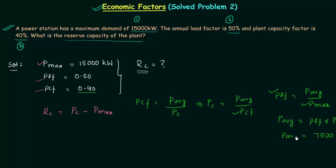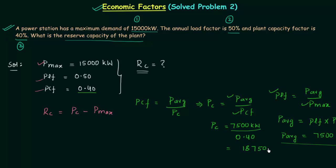This is the value of P average. I will substitute this value to calculate the plant capacity: 7,500 kW over PCF which is 0.40. When you solve it you will get 18,750 kW as the value of plant capacity. So the total capacity of this plant is 18,750 kW.